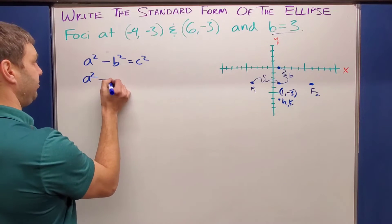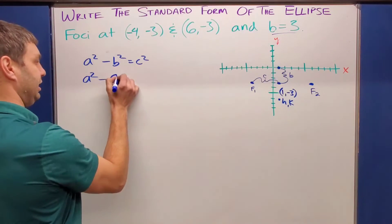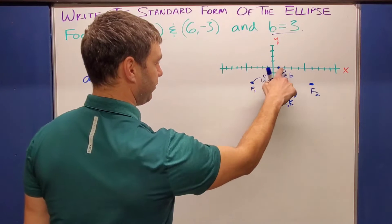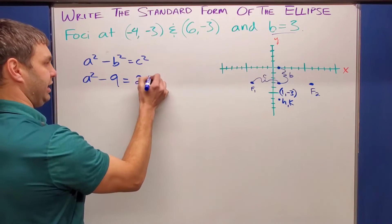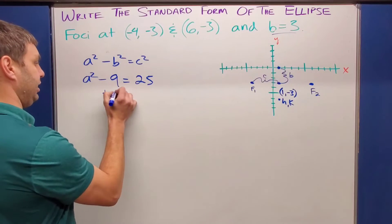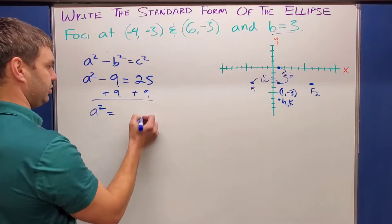All right. So let's see here. A squared minus my B we said was three or three squared is nine. And then the C value was, what did we say that was? One, two, three, four, five. So if I replace C squared with 25, just like this, that should be enough here to solve for A. Add nine to both sides and A squared equals 34.